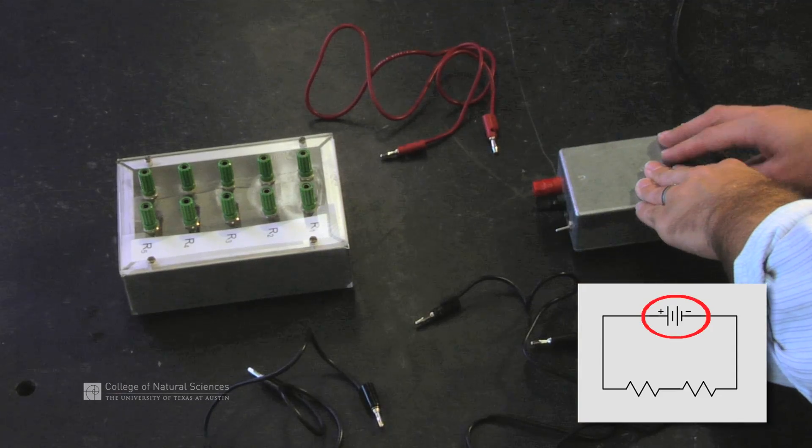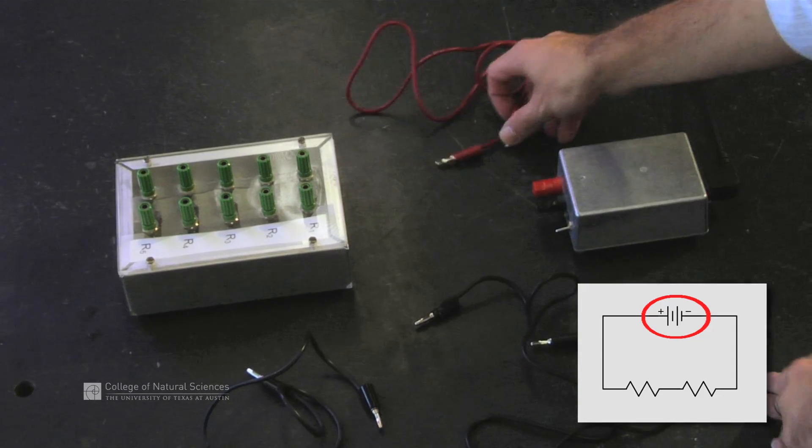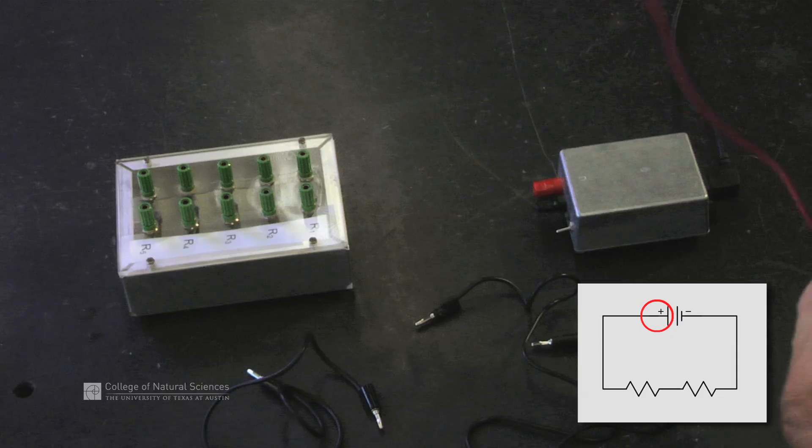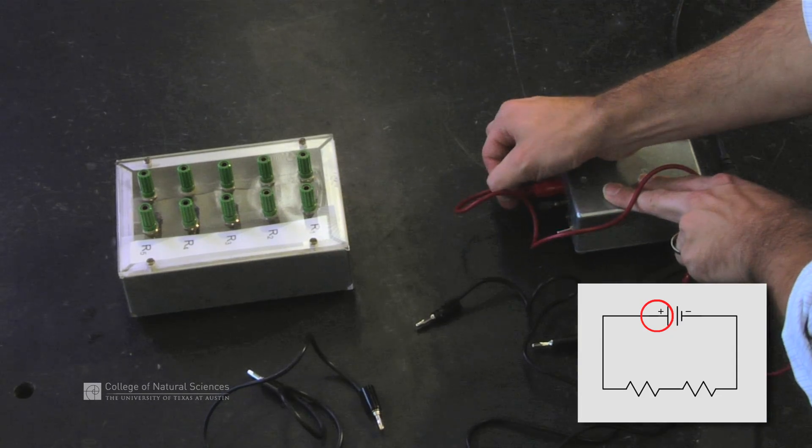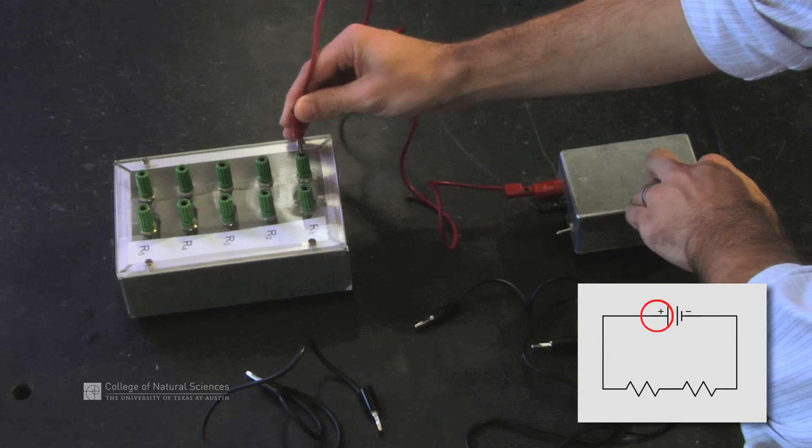Again, plug in our power supply into the wall, make sure that it's secure. We start at the positive terminal. The circuit diagram says again to connect a wire. That wire connects to a resistor.